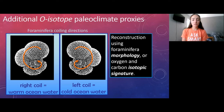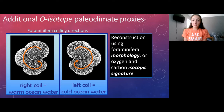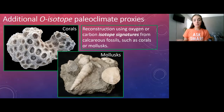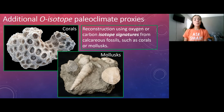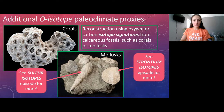In addition to oxygen isotopes, we can take carbon isotopes from carbonate material in foraminifera tests. Since calcium carbonate (CaCO3) contains both oxygen and carbon, we can use multiple isotope proxies from the same material. We can also use carbon and oxygen isotopes from other organisms like mollusks and corals, and even strontium and sulfur isotopes, to reconstruct temperature and paleoclimate.